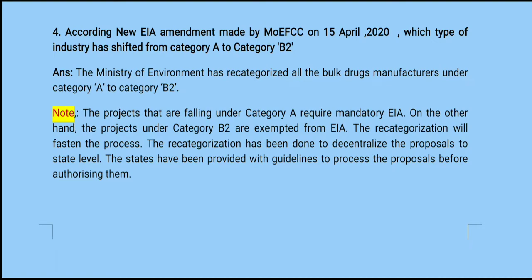Note point: projects falling under Category A require mandatory EIA, whereas projects under Category B2 are exempted from EIA. The recategorization has been done to decentralize the proposals to the state level. The states have been provided with guidelines to process the proposals before authorizing them. Thanks for watching.